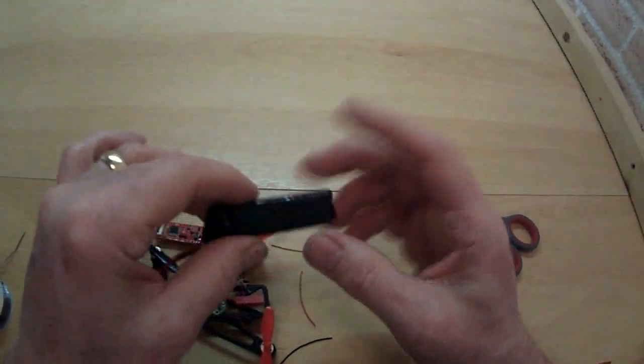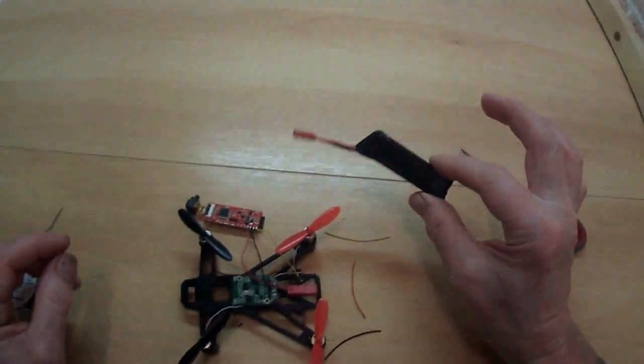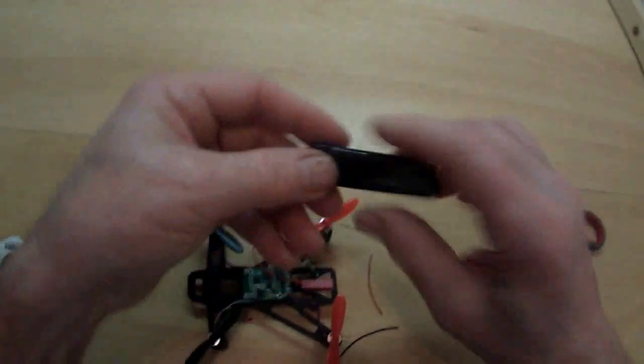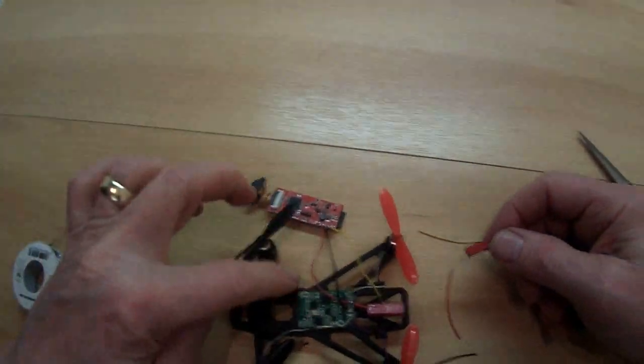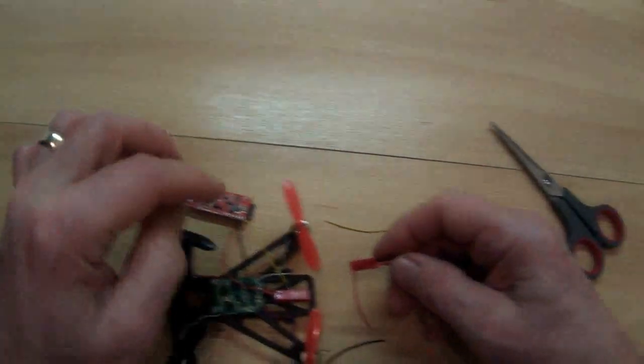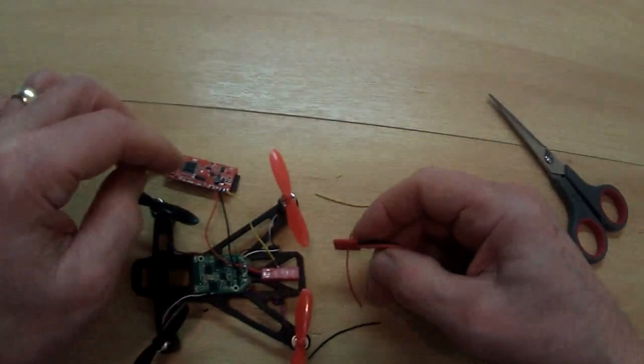What I've done is put some black sticky wrap around it just so it's the same color as the frame. And now when I plug this in the camera hopefully should come on.